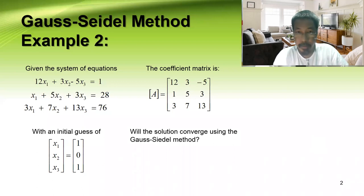The coefficient matrix form is the following, so matrix A contains the coefficients, and with an initial guess of x1, x2, x3 which is equal to one, zero, one, will the solution converge using the Gauss-Seidel method? Let us verify.